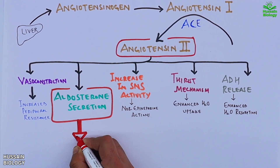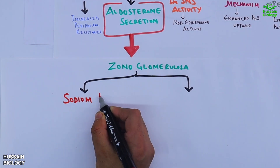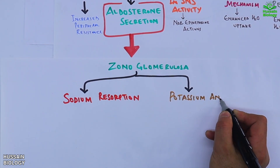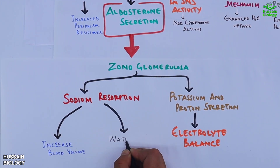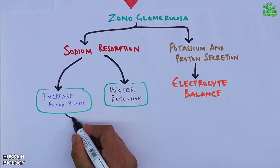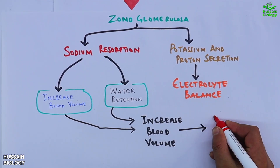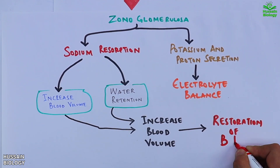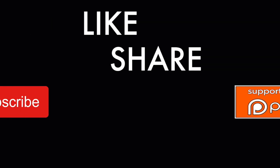Aldosterone secreted from zona glomerulosa of the adrenal glands acts on the kidneys, promoting sodium resorption and potassium and proton excretion. At the end we get electrolyte balance. Due to this sodium resorption we also get water retention, which ultimately leads to an increase in blood volume and restoration of blood pressure — that's homeostasis. This is how the renin-angiotensin-aldosterone system works within our body.